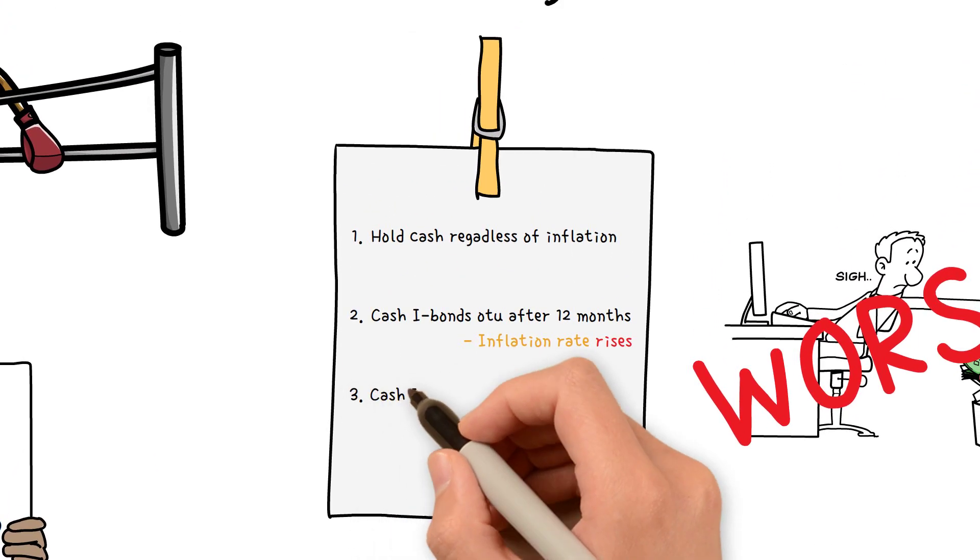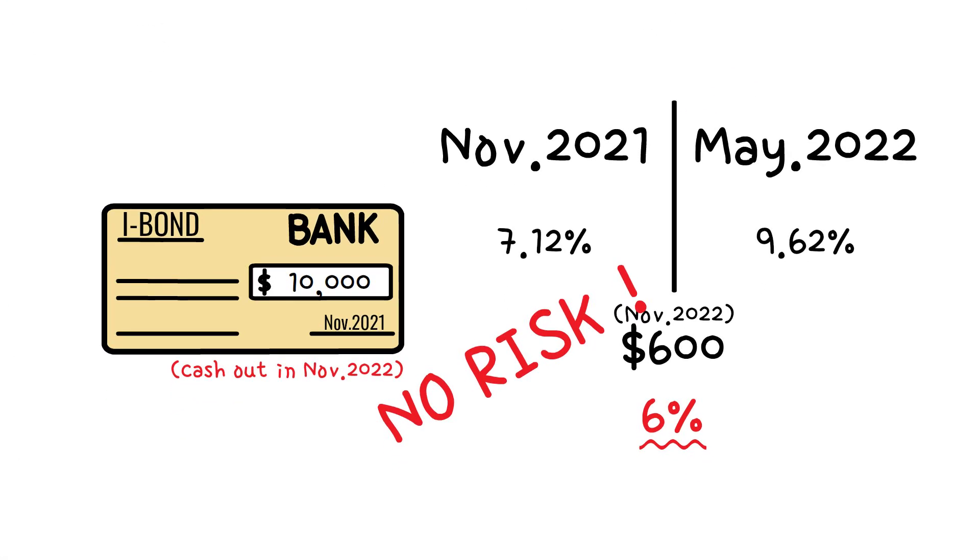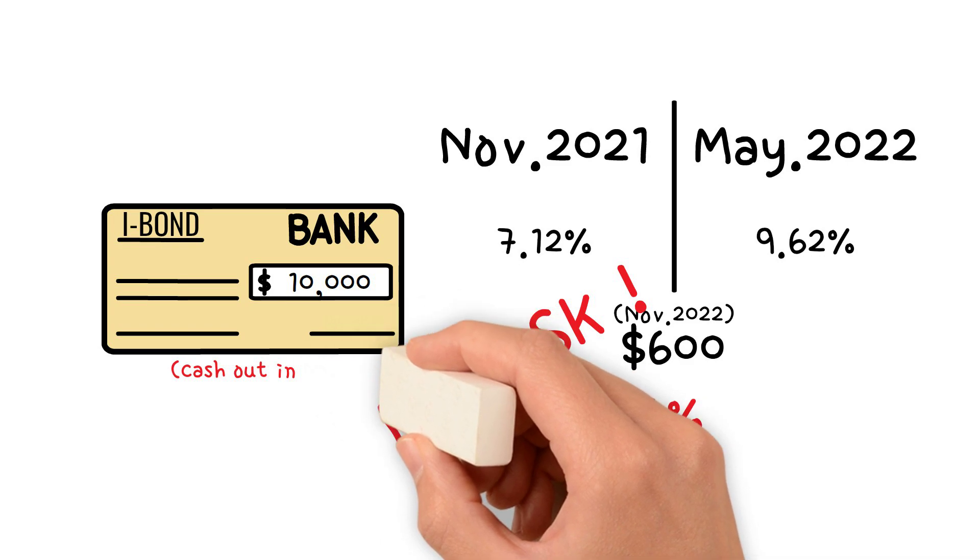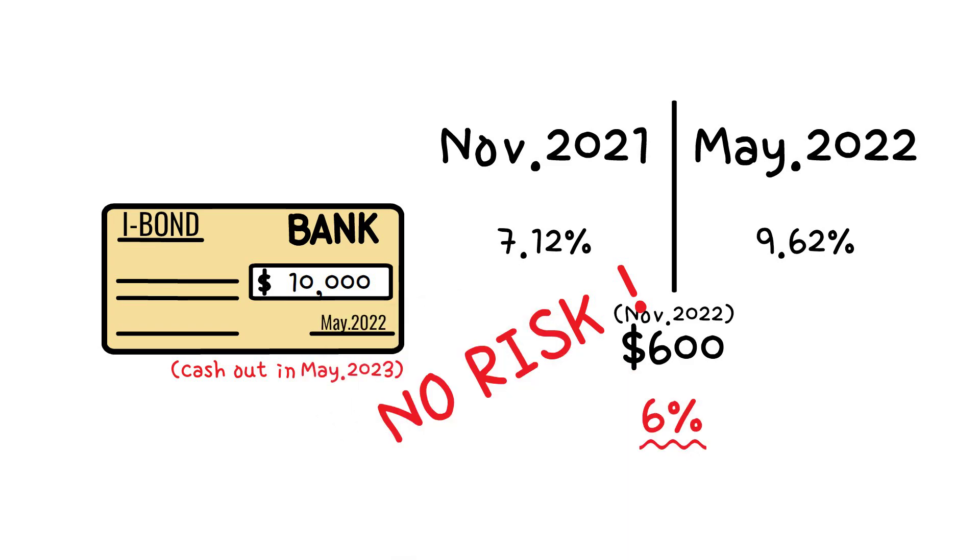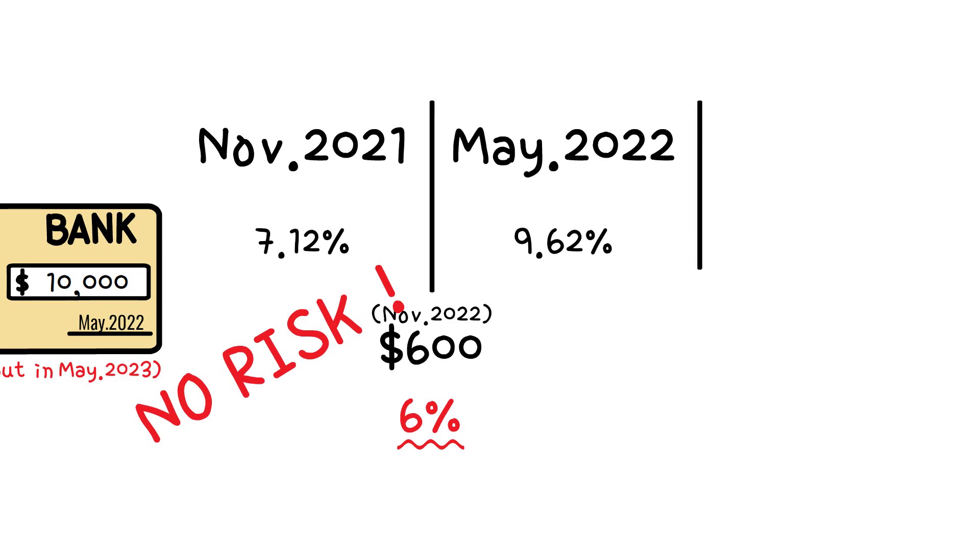Number 3: If you cash out your I bonds 12 months later in an environment where inflation rate is falling. Let's say you bought $10,000 in I bonds on May 22 and cashed out in May 2023.